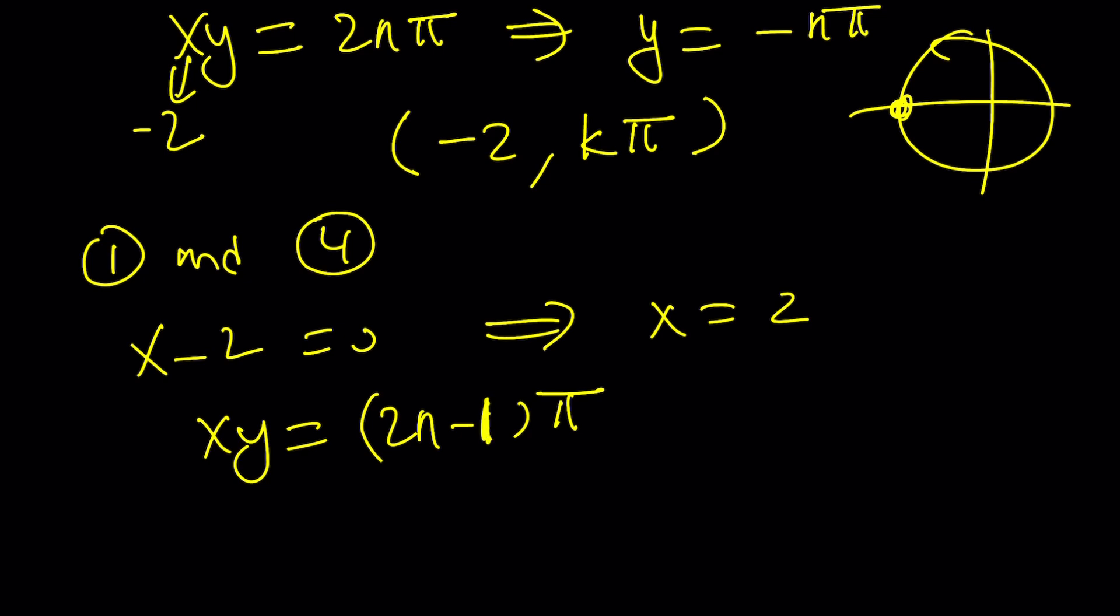And if x is 2, you get something interesting. y is going to be 2n minus 1 multiplied by pi over 2. So you kind of need to multiply pi over 2 by an odd number. For example, if n is 1, then y is going to be pi over 2.